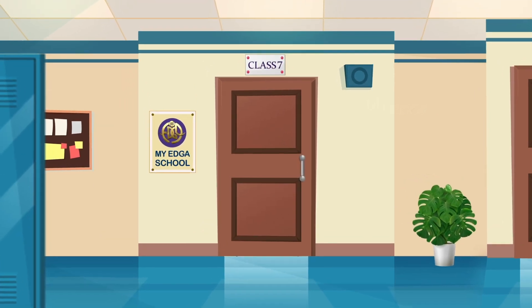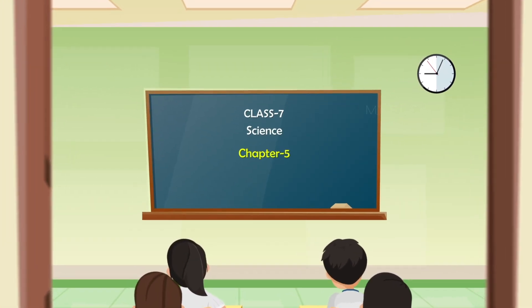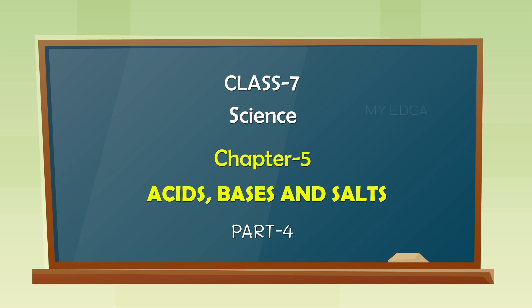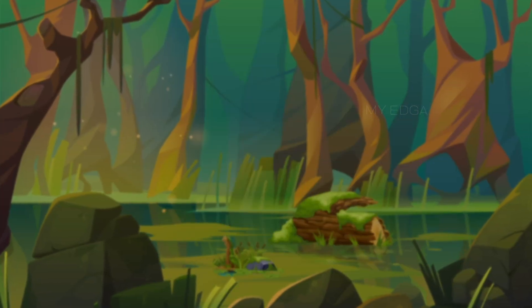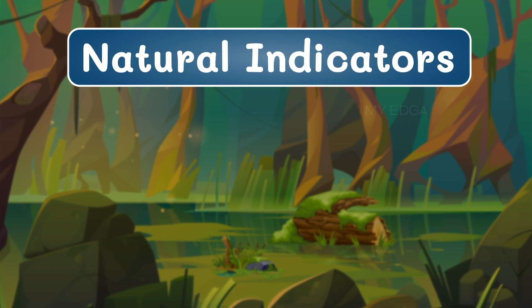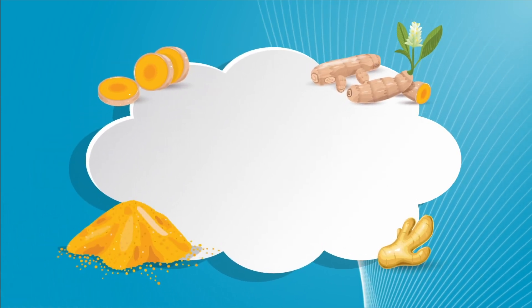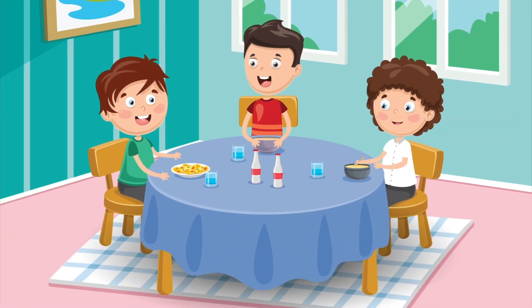Hello everyone, welcome to Class 7 Science Videos of Chapter 5: Acids, Bases and Salts. In our previous video we learned about the natural indicators and litmus. Today we will discuss another natural indicator, turmeric. Look at Trump, he is enjoying a delicious lunch with his friends.